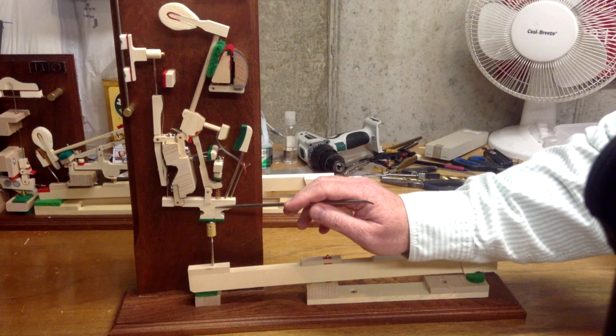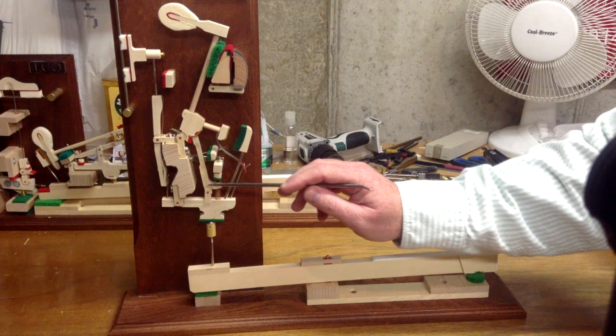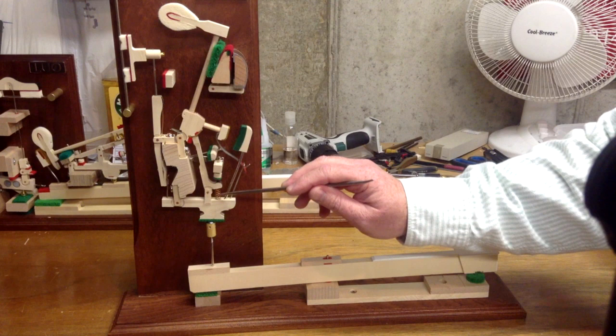Getting back to the whippen here, this piece right here is the jack flange. Then this is the jack right here. This right here is the jack spring. Those three pieces go together: jack flange, jack, and jack spring.